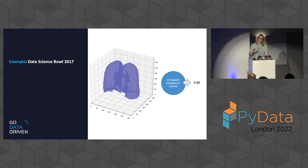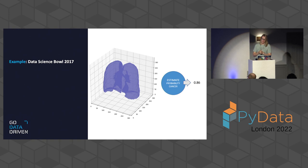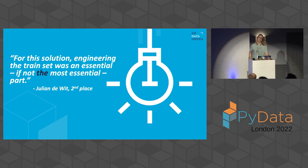Our company decided to participate and we ended up in third place. Looking at other solutions, it turned out that all the top scoring solutions basically completely disregarded the datasets they were given. The second place solution, by Julian DeWitt together with Daniel Hammock, stated that for this competition the engineering of the training set was essential — if not the most essential part of their solution.